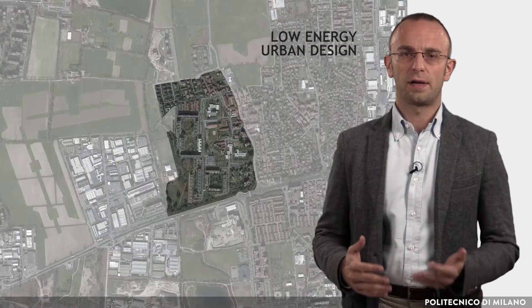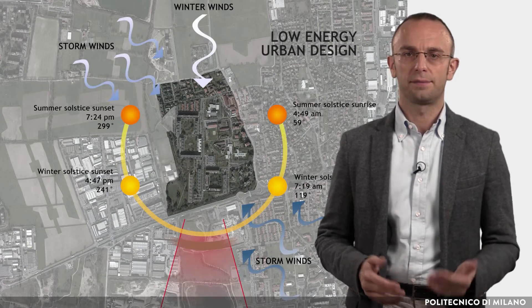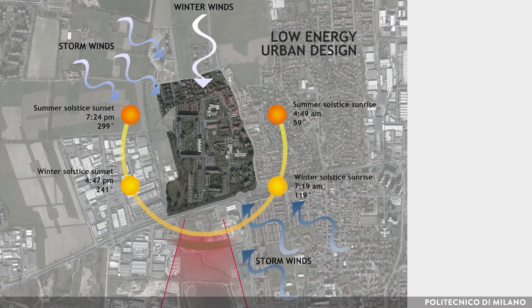As regards to site planning, low-energy urban design must optimize shape, orientation and distances between buildings, in order to control solar radiation and ventilation, with the aim of decreasing the energy demands of individual buildings. The urban layout greatly depends on climate and should be designed differently in each climatic zone.